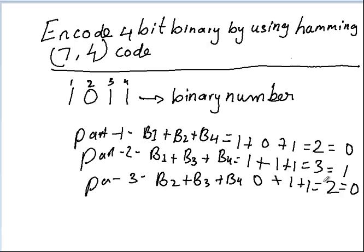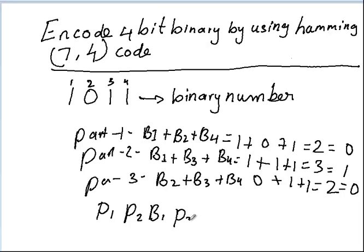Now we have found all three parity bits. To write the full 7-bit encoded word, the format is: parity bit 1, parity bit 2, binary bit 1, parity bit 3, binary bit 2, binary bit 3, and binary bit 4.